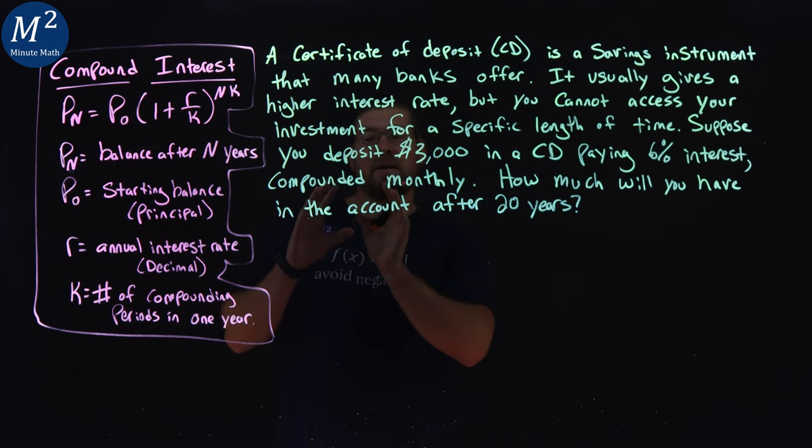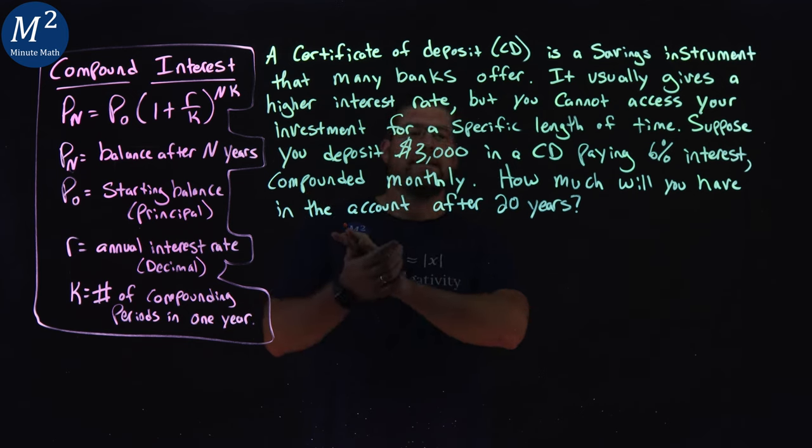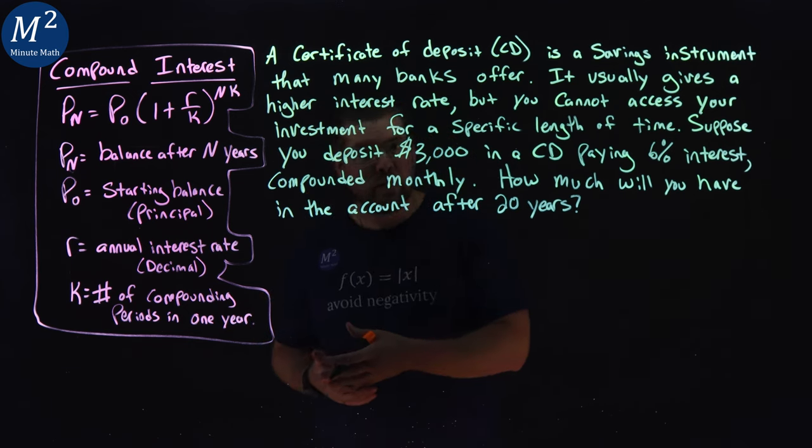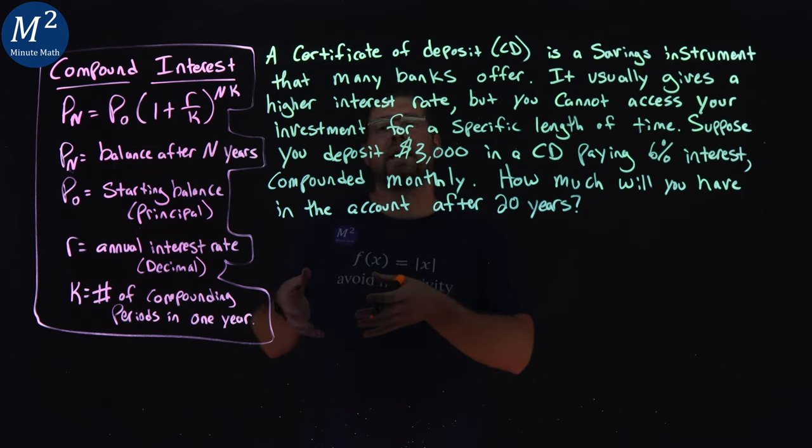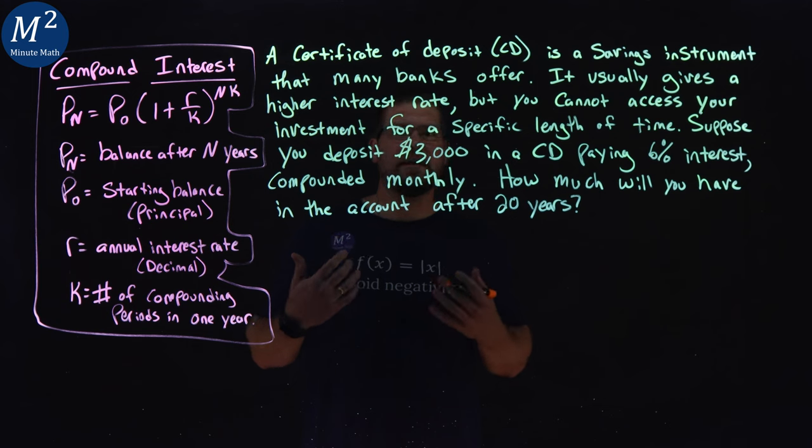Key thing here, as we know this is a compound interest problem. It's compounding monthly. It's an account for over 20 years. You're not adding more money into it. You're just taking an initial amount, putting it in, and letting it sit for 20 years. That's our calculation here.